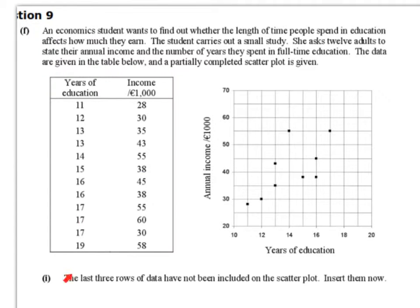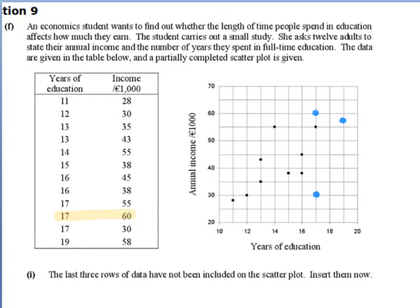Part 1. The last three rows of data have not been included on the scatterplot — insert them now. So for the point (17, 60): we go to 17 on the horizontal axis and we go to 60 on the vertical axis, then go across and up and plot our point.